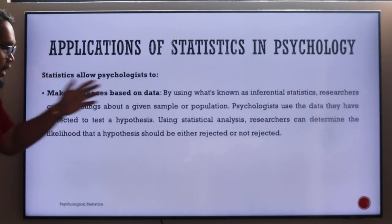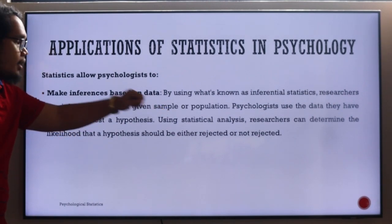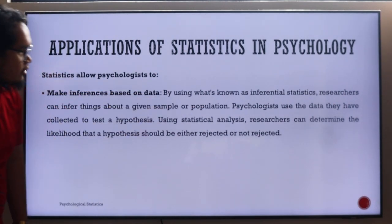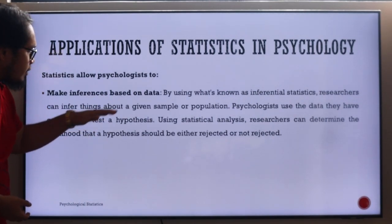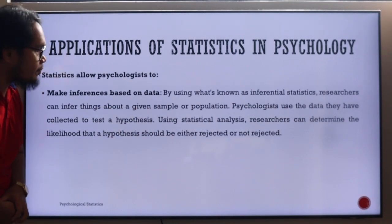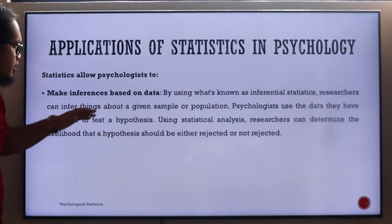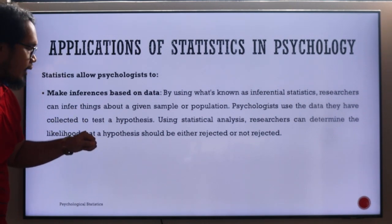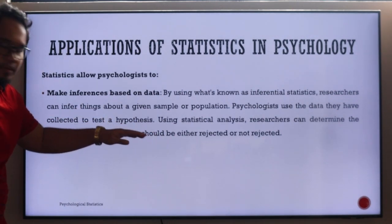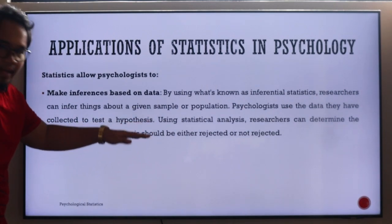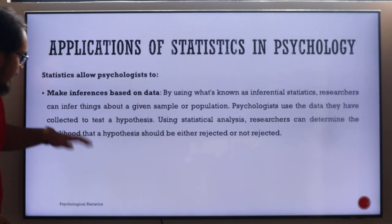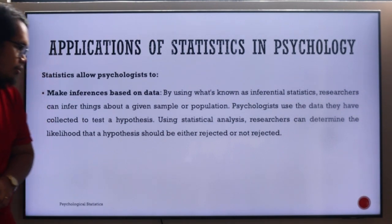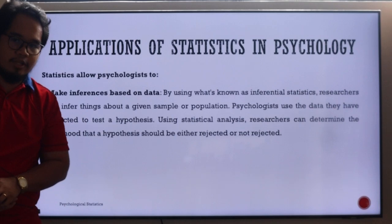Lastly, statistics allow psychologists to make inferences based on data. By using inferential statistics, which will be the second portion of our discussion, researchers can infer things about a given sample or population. Psychologists use the data they have collected to test a hypothesis — essentially an educated guess. Using statistical analysis, researchers can determine the likelihood that the hypothesis should be rejected or not rejected.